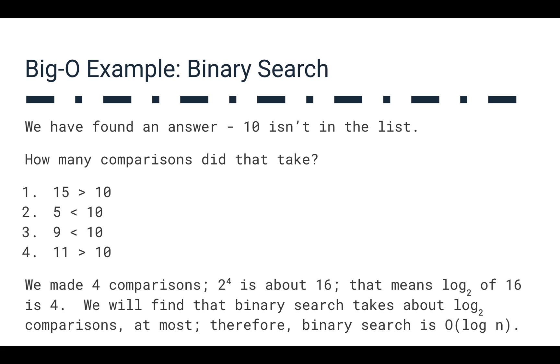So if we break this down, if we want to try to think about logarithms, and I know logarithms can be confusing sometimes. Basically, what we're trying to find out is in this case, log base 2 of what ends up to be 16. So if we look at 2 to the fourth power, that's 16, right? 2 to the fourth power, 2 times 2 is 4 times 2 is 8 times 2 is 16. That means log base 2 of 16 is 4. So we're just kind of reversing that exponent there. We'll find that binary search takes about log base 2 comparisons at most. Therefore, binary search is Big O of log n.